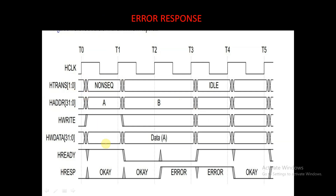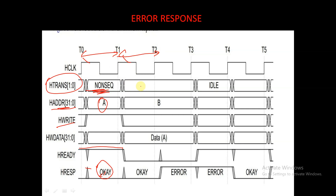Let's see an example. A master has selected an address A, HTRANS is non-sequential, HREADY is high, and HRESP is OK. In clock cycle T0 to T1, the data has been transferred. In the 2nd clock cycle T1 to T2, the address is B and data A has been transferred. HREADYOUT is equal to 0 during T1 to T3 and HRESP is OK.